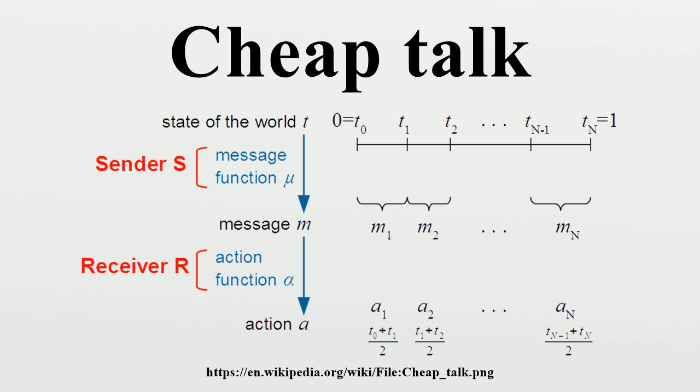This basic setting set by Crawford and Sobel has given rise to a variety of variants. To give a formal definition, cheap talk is communication that is, according to Farrell, costless, non-binding, and unverifiable. So an agent engaging in cheap talk can lie with impunity.